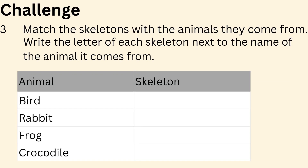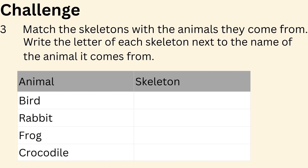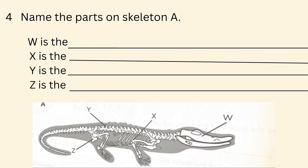Challenge 3. Match the skeleton with the animals they come from. Write the letter of each skeleton next to the name of the animal it comes from. Skeleton C - Rabbit. Skeleton D - Frog. Skeleton B - Crocodile. Skeleton A. Named the bones on skeleton A: W is the skull, X is the ribcage, Y is the spine, Z is the hip.